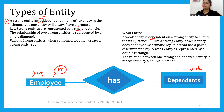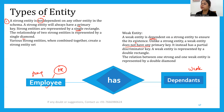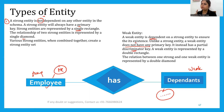Unlike a strong entity, a weak entity does not have a primary key — this is a very important point for true or false questions. A weak entity has a discriminator instead of a primary key, and the discriminator is dependent on the strong entity's ID, as discussed in the previous video.